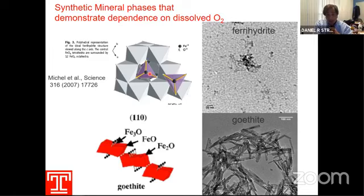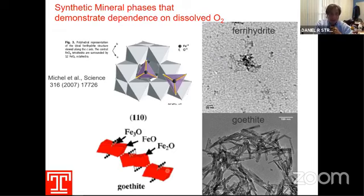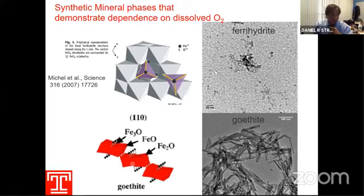Ferrihydrite is a small band gap semiconductor with a band gap of roughly 2.5 electron volts. Goethite is a much more common material in nature, seen in needle structures with double chains of octahedrally coordinated iron. We're going to compare these two phases — even though they're both iron oxy-hydroxide phases, I'll show you some subtle differences in surface chemistry that actually change the redox chemistry.